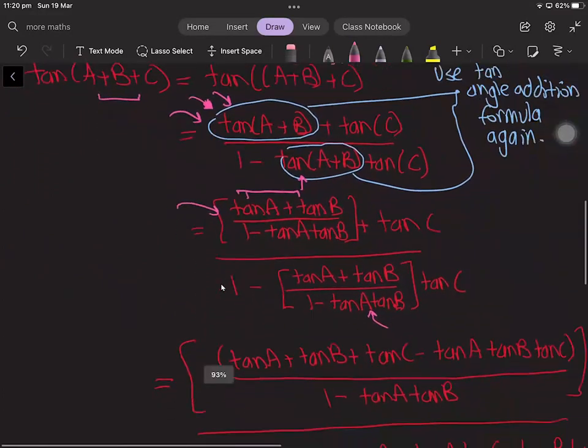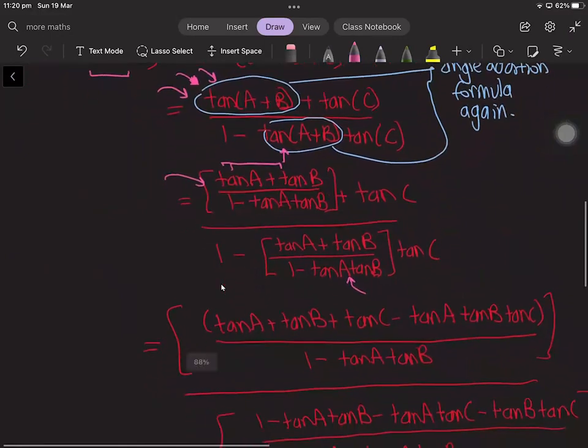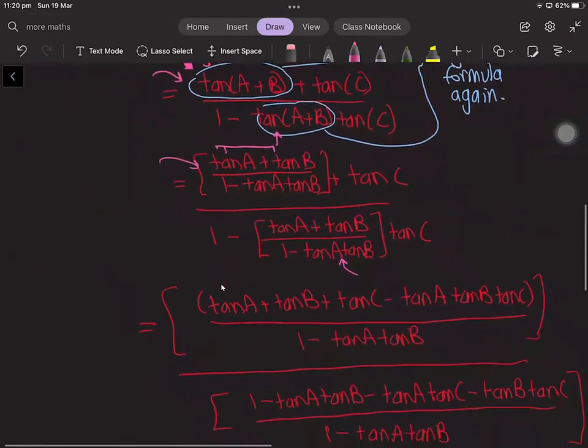Okay, so now we can simplify this, and what you can do is multiply the numerator and denominator of this fraction by 1 - tan(A)tan(B).